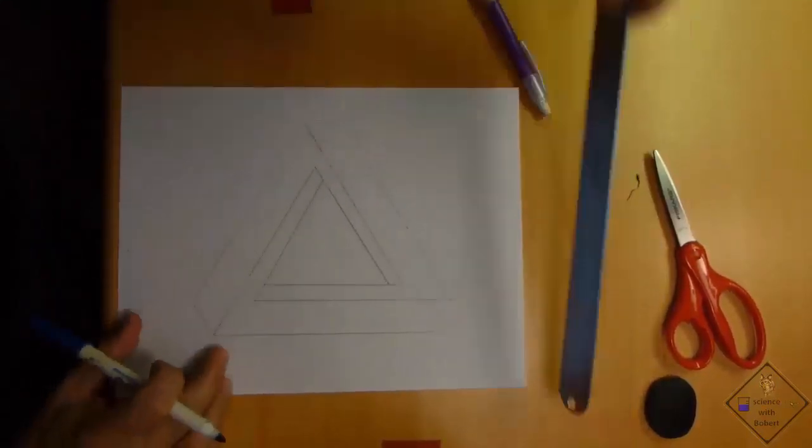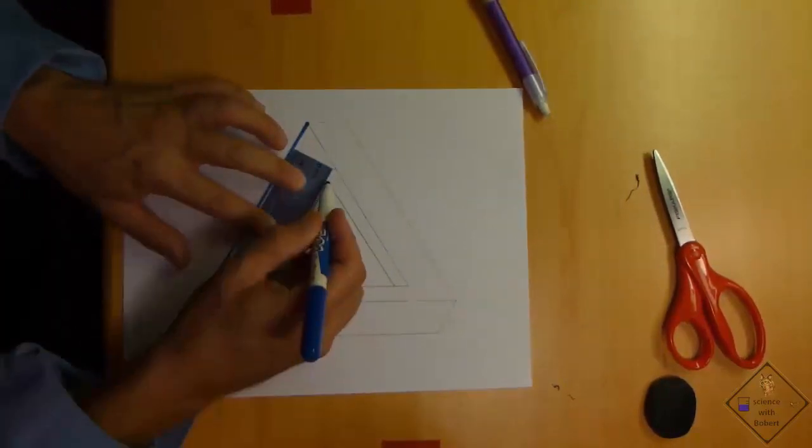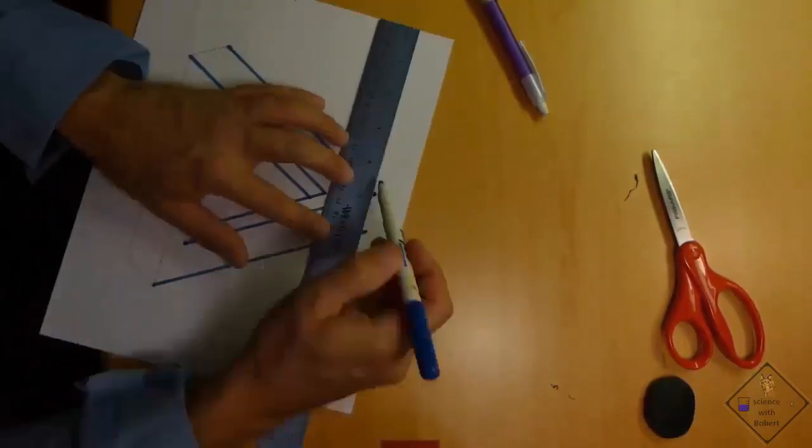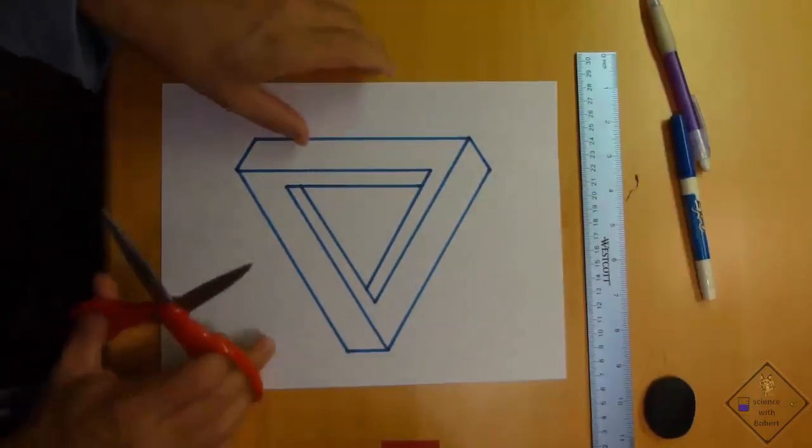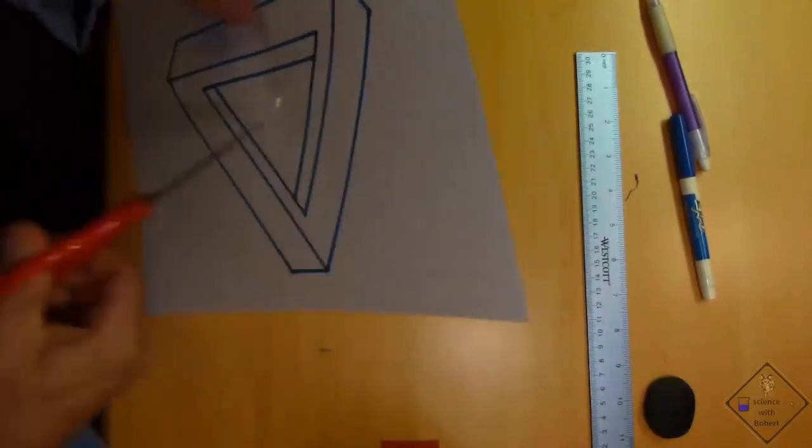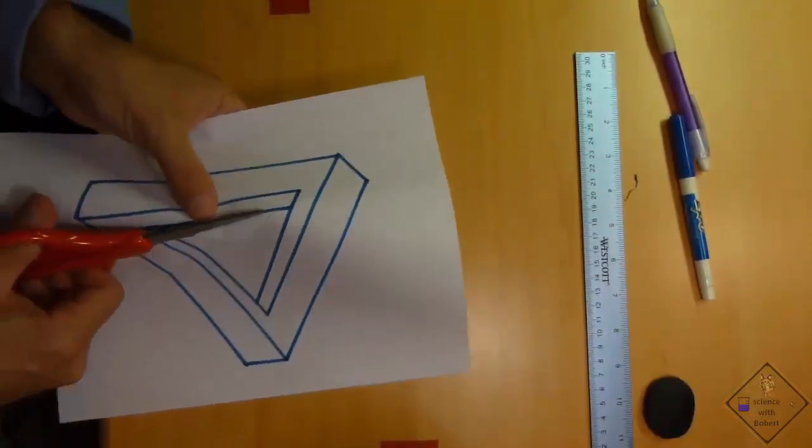To make the illusory effect stronger, Dr. Smith is now going over all of the other lines with a marker. He is now going to use a scissors to cut out the center triangle and the outside border to create his Varastro impossible triangle.